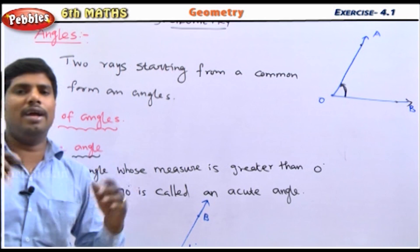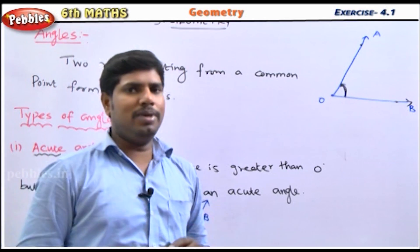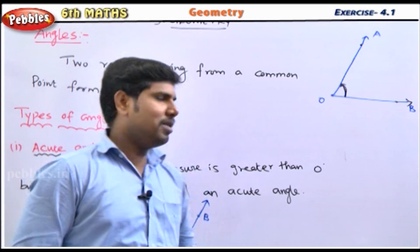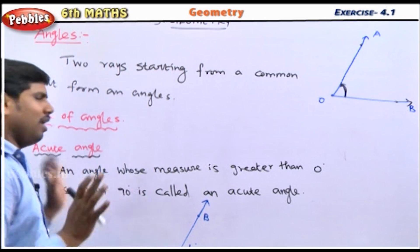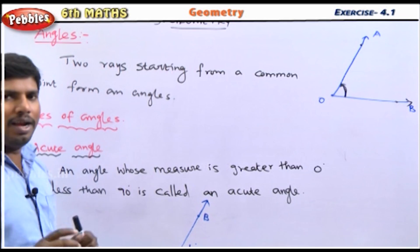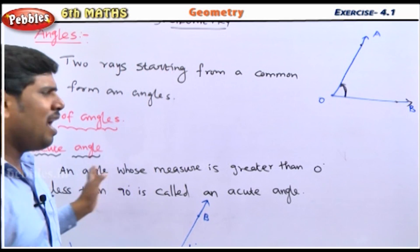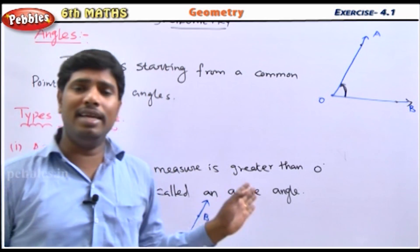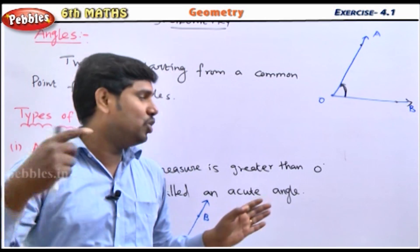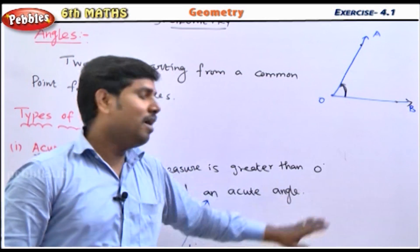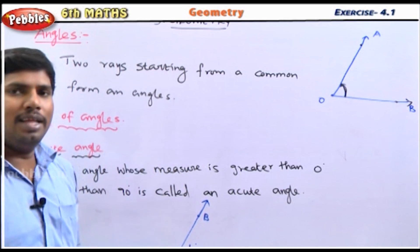What is the type of angles? The first type is the acute angle. An angle whose measure is greater than 0 degrees but less than 90 degrees is called an acute angle.